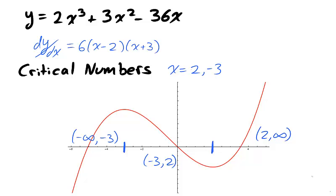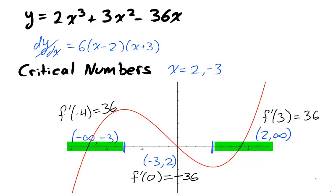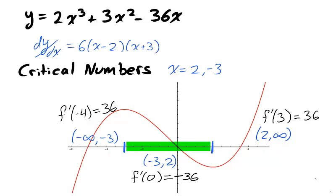We divide the real line into three intervals: negative infinity to −3, −3 to 2, and 2 to infinity. On each interval, the derivative is either always positive or always negative. Using test points, we find that the intervals (−∞, −3) and (2, ∞) are increasing, while the interval (−3, 2) is decreasing. Notice that the graph supports the calculations and the theory.